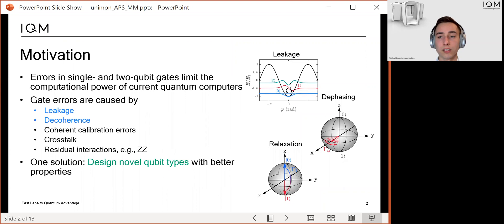I begin with a brief motivation and tell you why it is relevant to study new types of superconducting qubits. As you probably know, superconducting circuits provide one of the most promising architectures for quantum computation. However, the single and two-qubit gate errors are still limiting the computational power of current quantum computers.